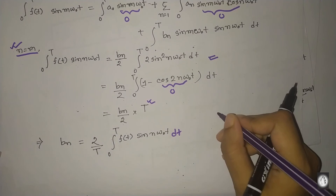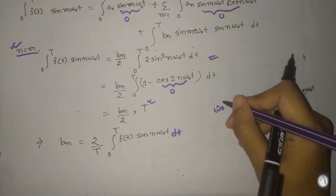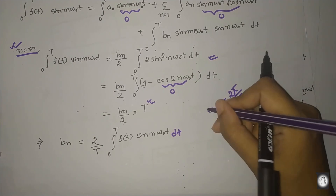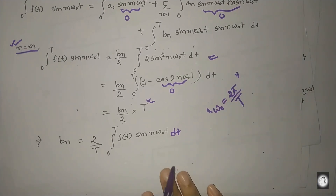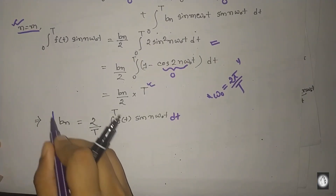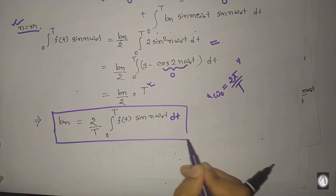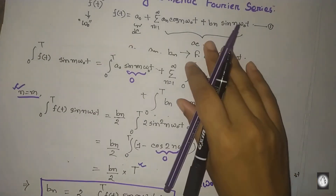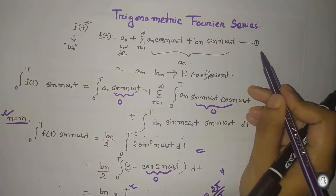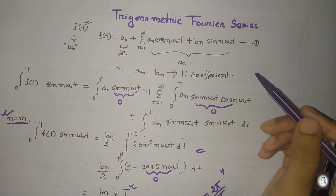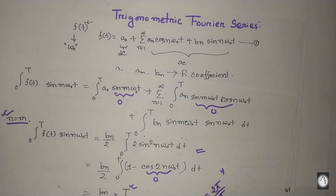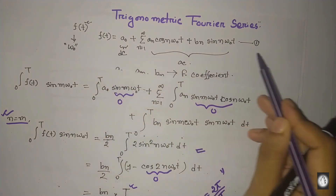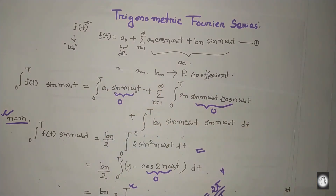Therefore b_n equals (2/T) times the integral from 0 to T of f(t)sin(nω₀t)dt. Here ω₀ is the angular frequency, where ω₀ = 2π/T. Using these three equations we can find all Fourier coefficients mathematically. With these formulas — A0, a_n, and b_n — we can expand any Fourier series. In subsequent videos, we will see how to use these equations.